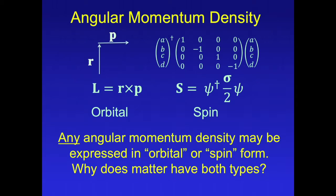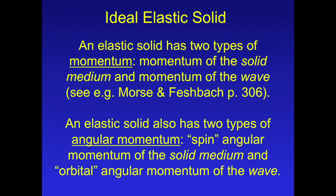Any angular momentum density may be expressed in orbital or spin form. So why does matter have both types of angular momentum? An elastic solid has two types of momentum: momentum of the solid medium and momentum of the wave. You can look this up in any textbook on elastic wave motion, for example, Morsen-Feschbach. An elastic solid also has two types of angular momentum: spin angular momentum of the solid medium and orbital angular momentum of the wave.